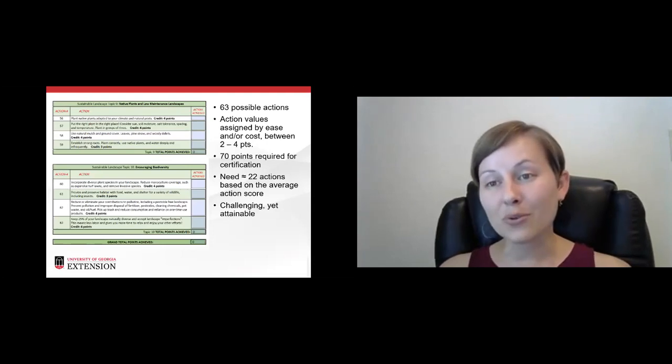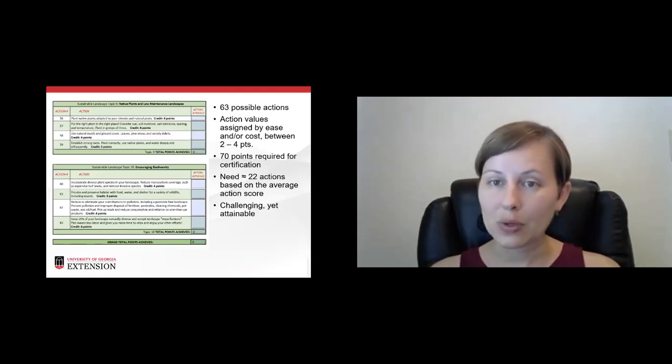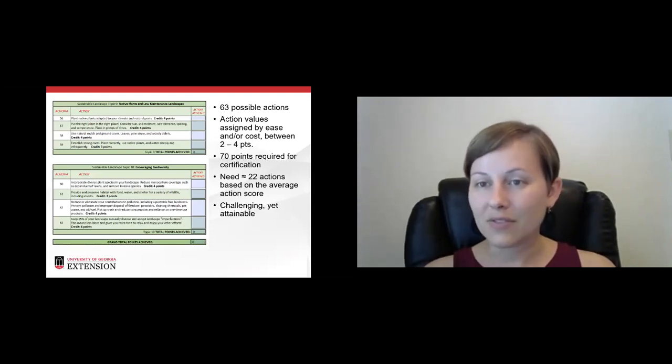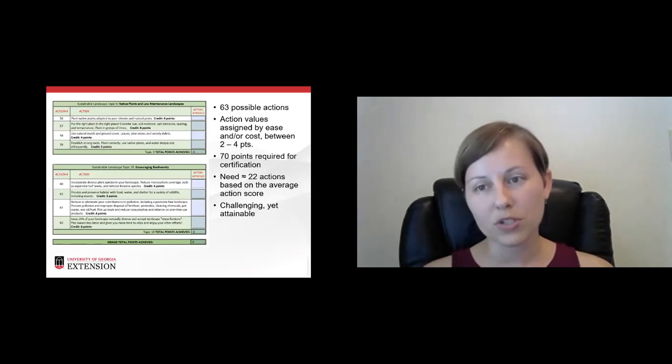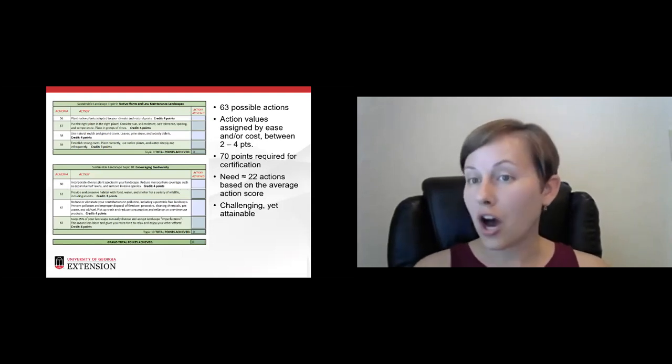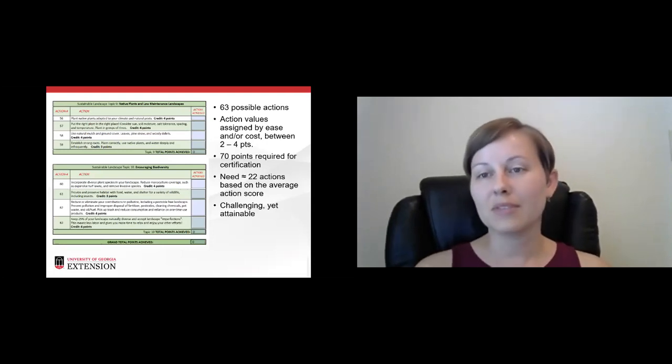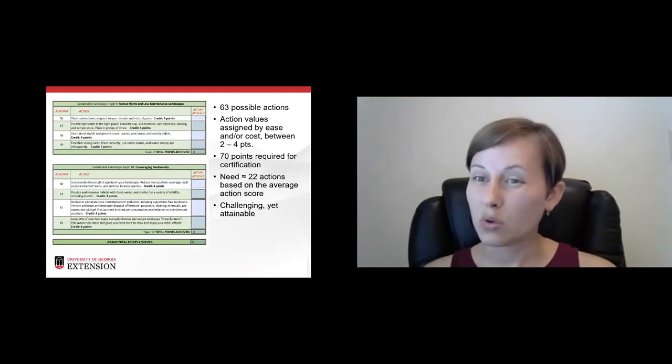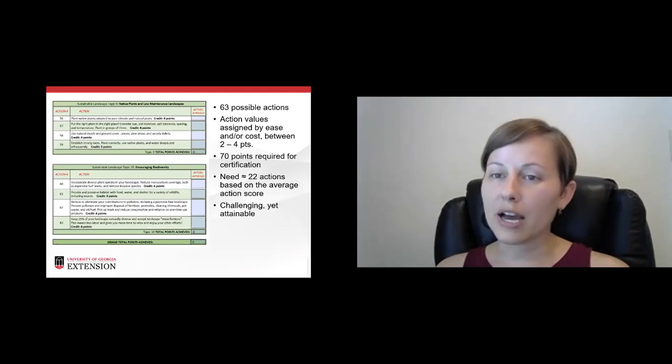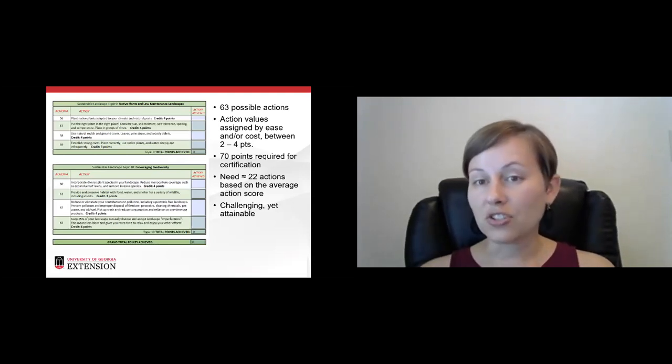So it'll give you a total for the composting action, but it'll also at the end add all of your actions from all the boxes together to give you a score. And as I mentioned, auto calculates, it requires 70 points. We kind of tried to keep it simple. Most people think 70 is passing and below 70 is failing. So there are 63 possible actions, but each action has a different value, which is mainly assigned by the ease of the action or the cost. So things that are super simple to do, or maybe it's an action that's a not doing something, that's probably going to have less value than something that requires a little more work. So they have between two and four points of value each.